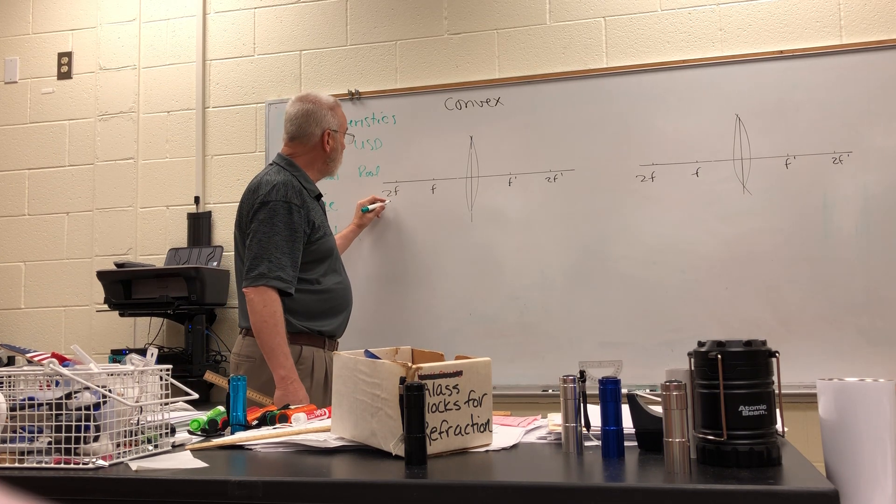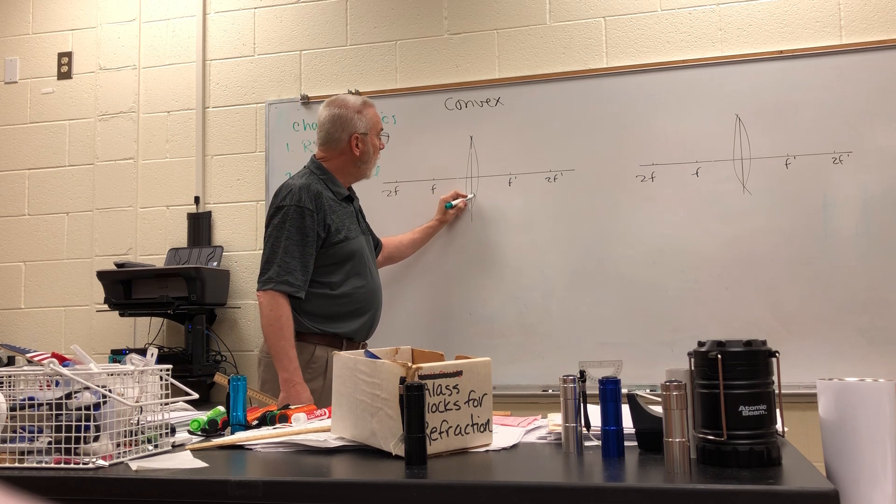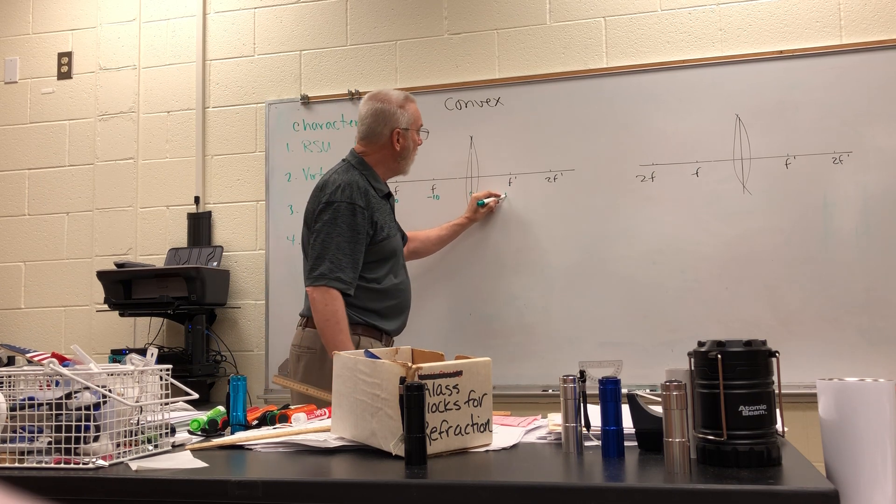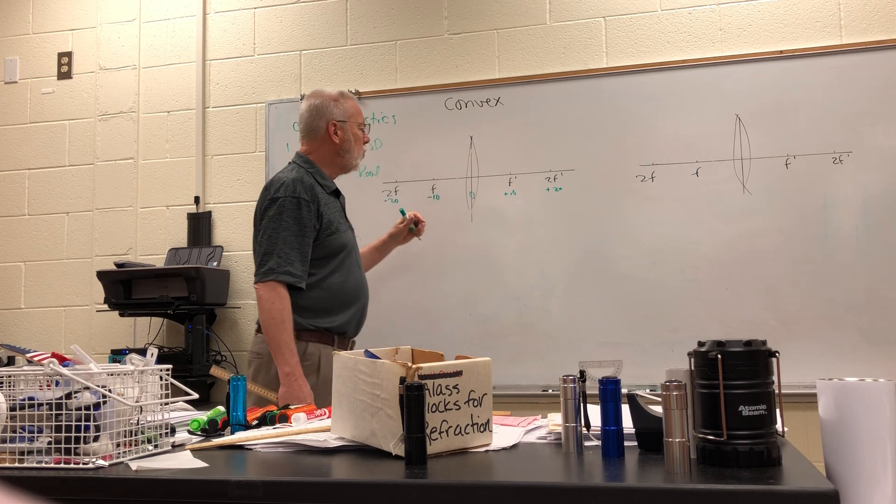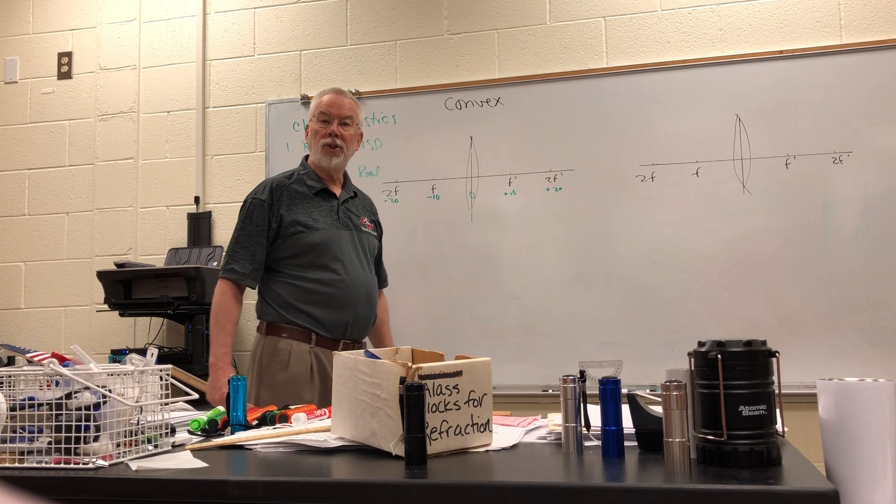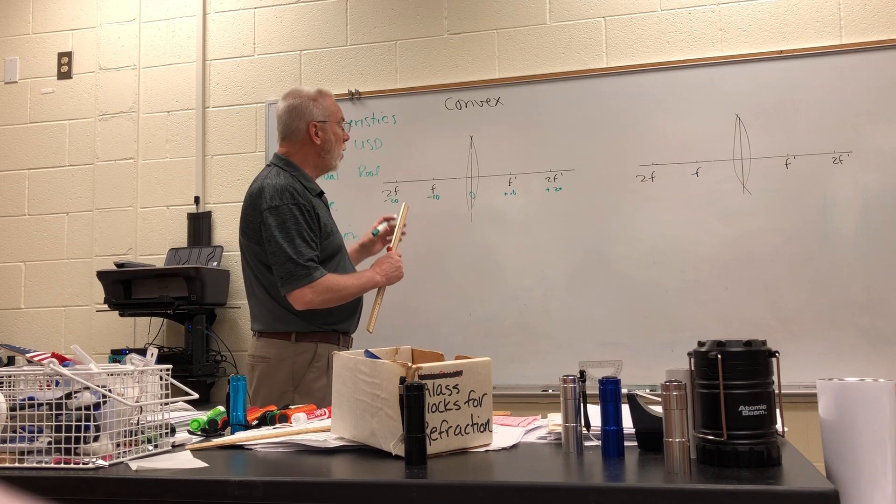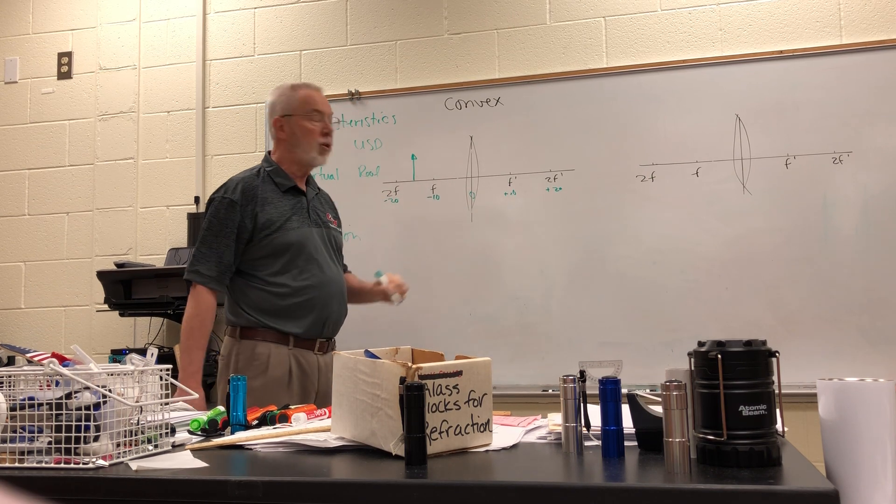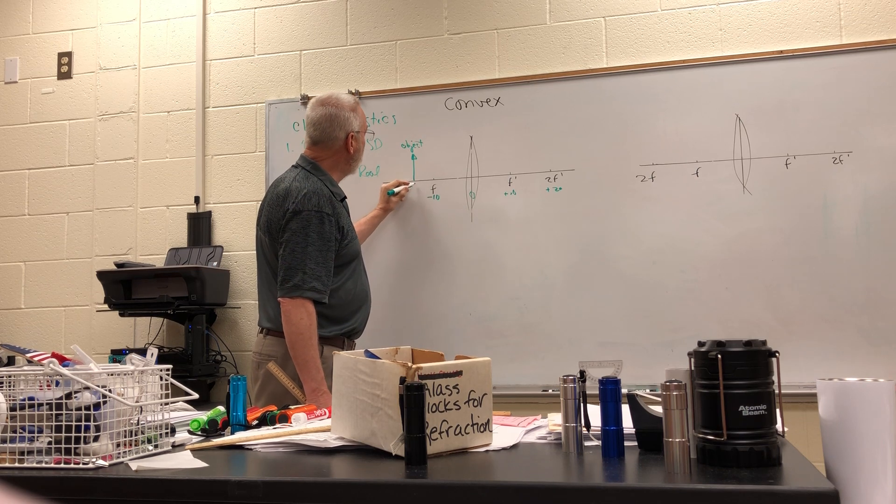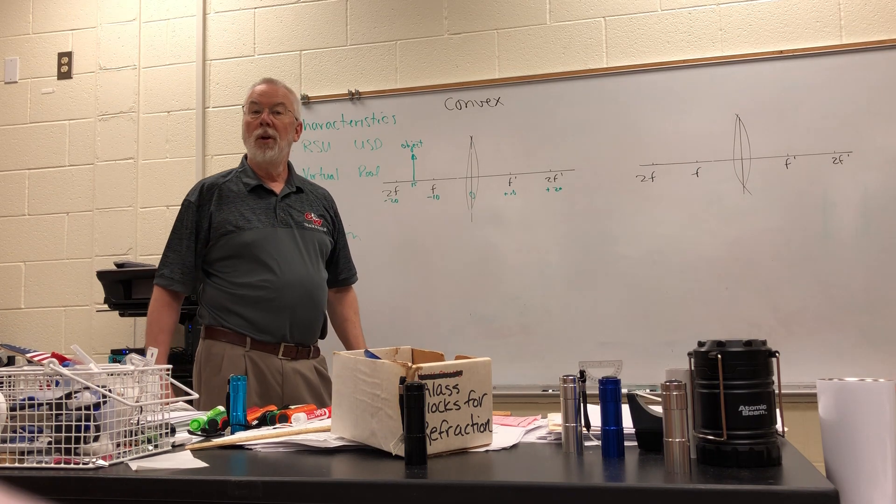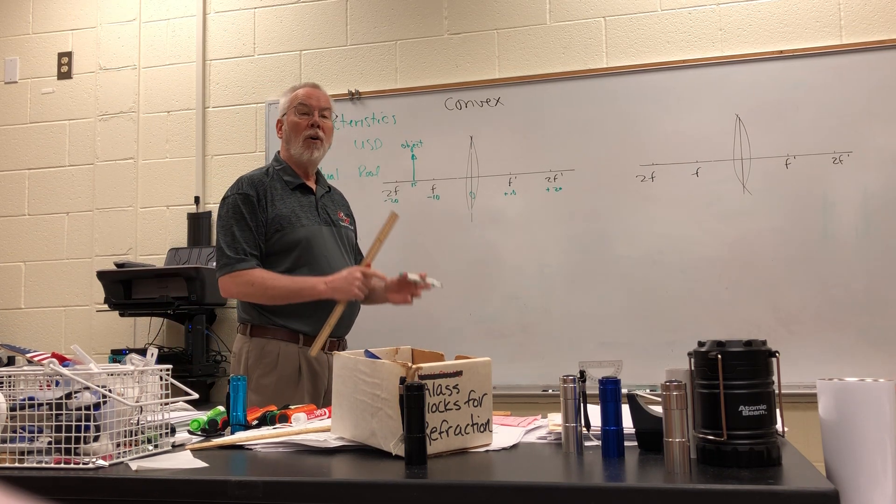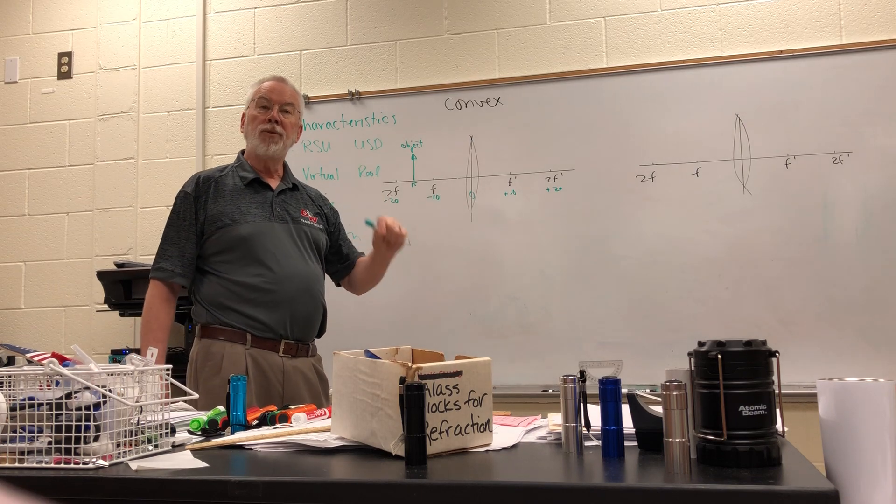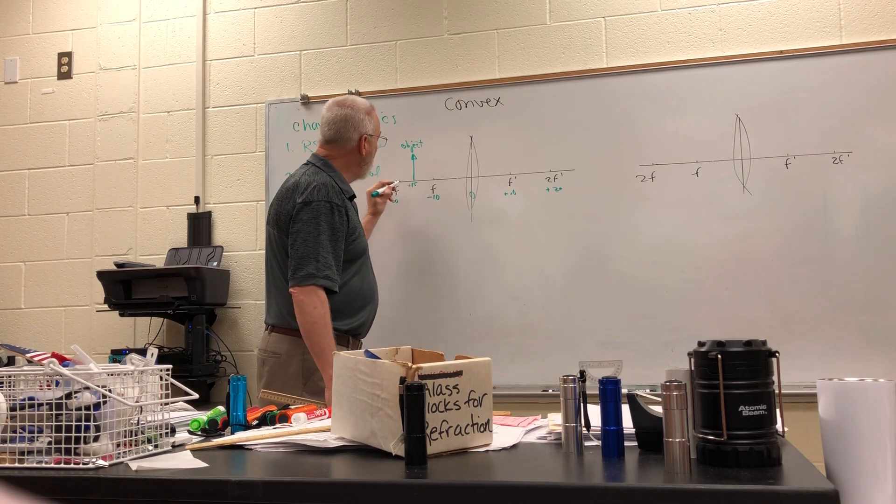Another thing that we want to establish is that it's going to be numbered like a number line. So if the center of the lens is at zero, let's say that this is negative 10 and negative 20 and positive 10 and positive 20. And so we can establish where our images are located based on where the object is. I'm going to pick a spot and say, here's my object at 15 centimeters away from the lens. Now we're going to say that all object distances are positive. I know that it's over here on the negative side of the number line, but object distance is always positive.